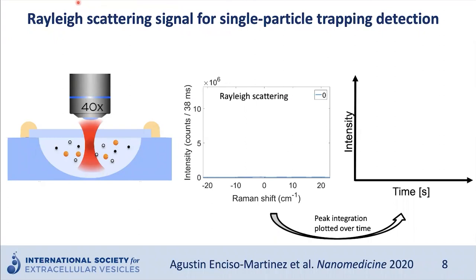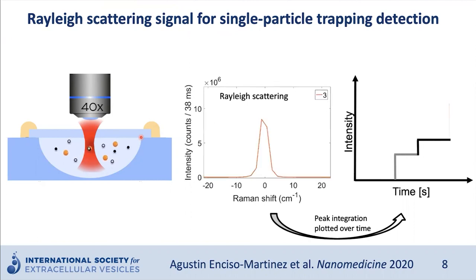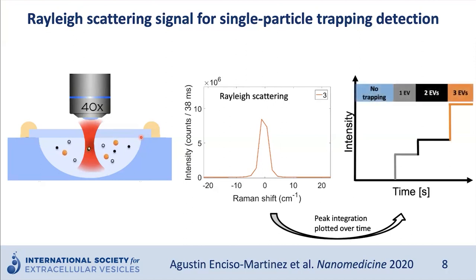Optical trapping, also known as laser tweezing, is a technique developed by Nobel Prize winner Arthur Ashkin. It enables the trapping of particles by a focused laser — the same laser employed for Raman spectroscopy. You can see an animation of a particle being trapped. This is a more advanced form where you can actually monitor the Rayleigh scattering signal at the same time as the Raman signal, since the Rayleigh signal rapidly increases every time a particle is trapped. Using this, you can tell if no particle, a single particle, or multiple particles are trapped in each focal spot.